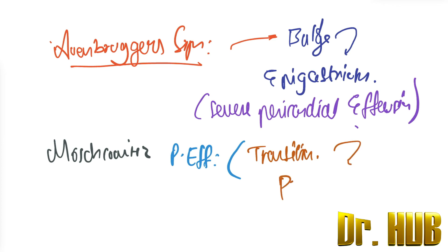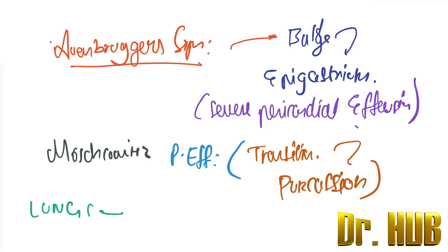This transition is seen on percussion — the low transition on percussion from the lungs to that of the right heart border. This transition will be abrupt.